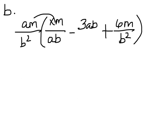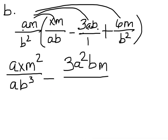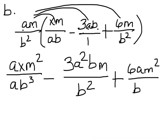In this one I'm going to distribute 3 times. In this middle term, because it's not a fraction, I'm going to make it a fraction. So first term, AXM squared over AB to the 3rd, minus 3A times A is A squared BM over B squared, plus 6AM squared over B to the 4th.